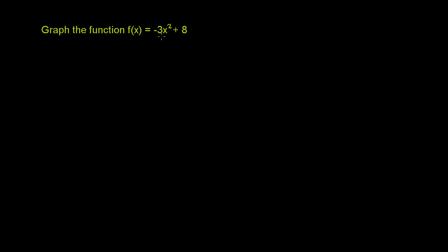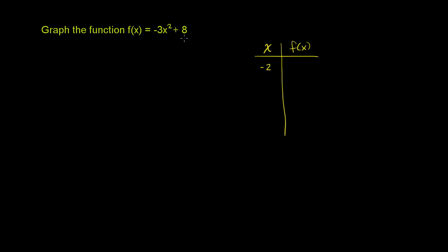We're asked to graph the function f of x equals negative 3x squared plus 8. Let's try a couple of x values and see what values f of x takes on, then plot them to graph our function. I'll draw a table with x and f of x. I'm picking numbers relatively close to 0 on both the negative and positive side — integers, since those are easy to work with. These are arbitrary points sampled from the domain to get the general shape of the curve, and then I can connect the dots.